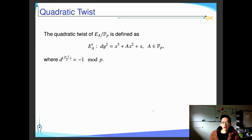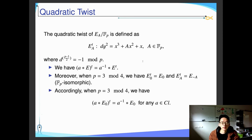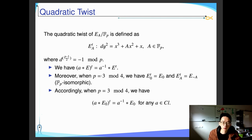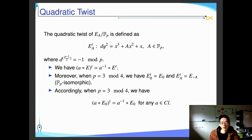We also use some properties of quadratic twists in our work. The quadratic twist of a curve defined over Fp has one more coefficient in front of y-squared, and this coefficient is a quadratic non-residue. There are three propositions: first, if you take a twist of [A]E, you get [A^{-1}]E-twist. Moreover, when p ≡ 3 mod 4, the twist of E_0 is still E_0, and the twist of [A]E_0 equals [A]E_{-A}. Accordingly, the twist of [A]E_0 equals [A^{-1}]E_0 for any group element in the ideal class group.